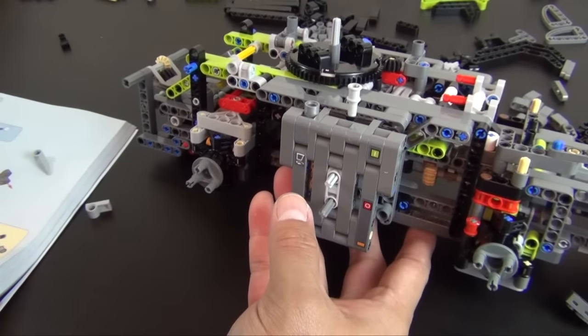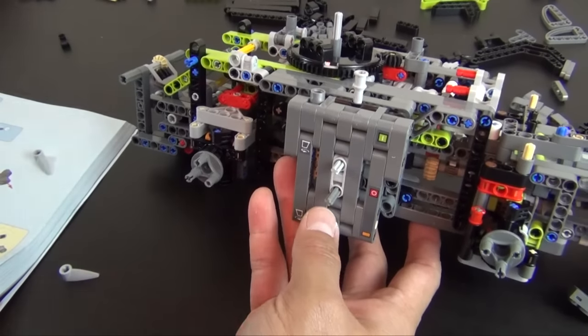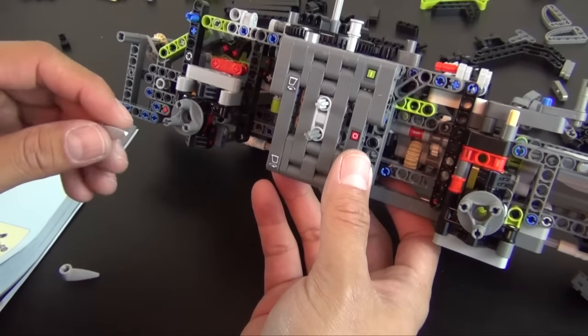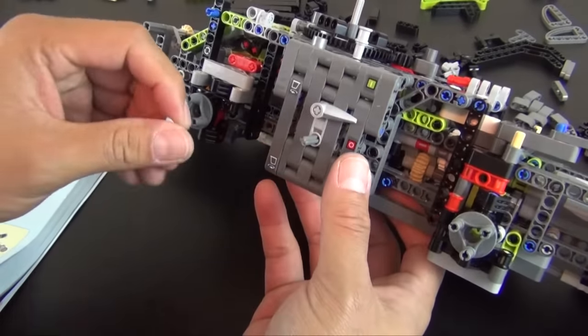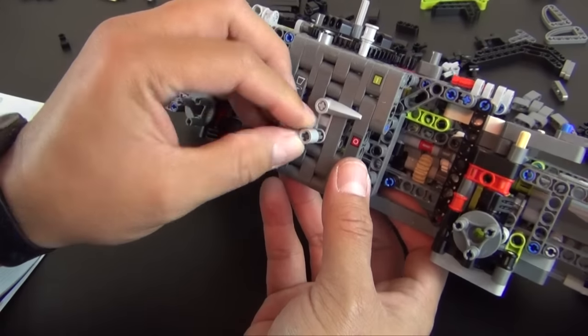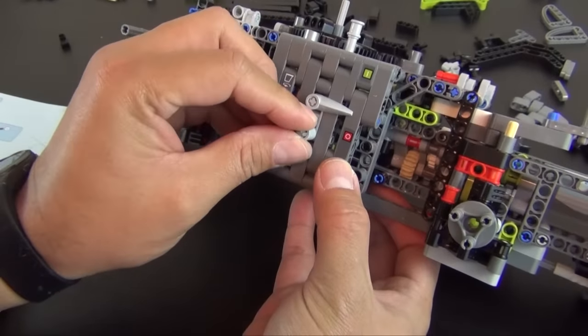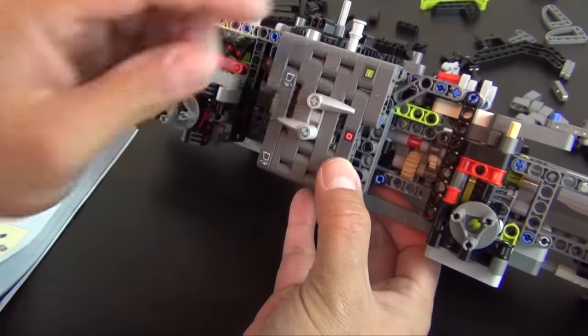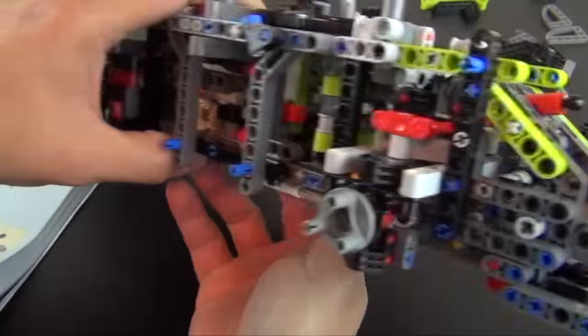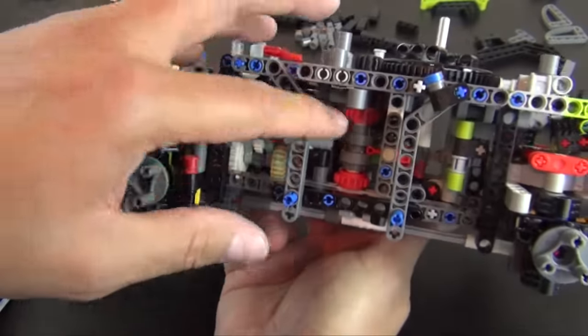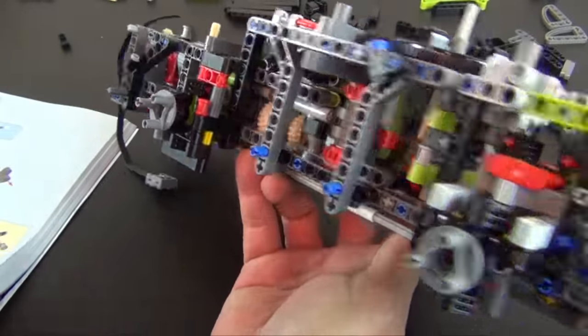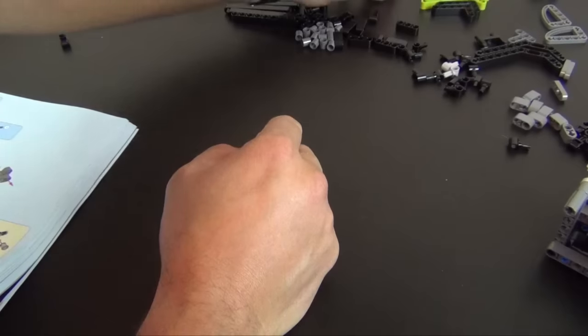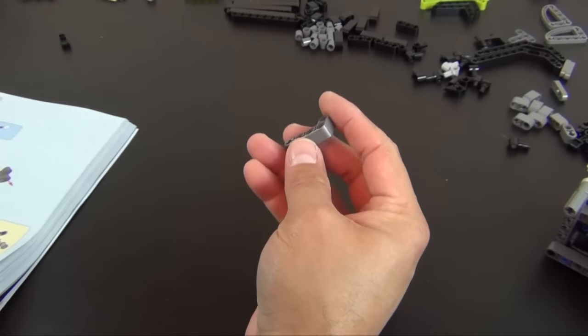Now we have a couple selector switches. That goes there and this one goes here. If we turn it around, everything should be straight in line there and it is. Everything looks good. Move this to the side and build another one, probably for the other side.